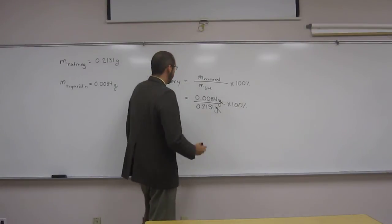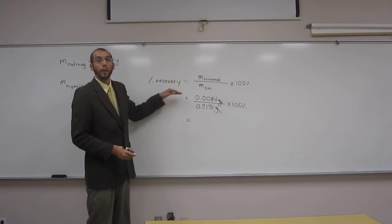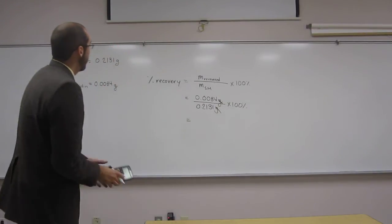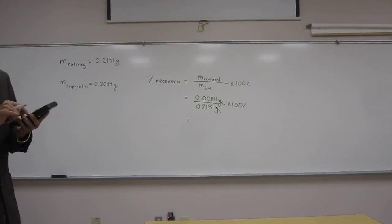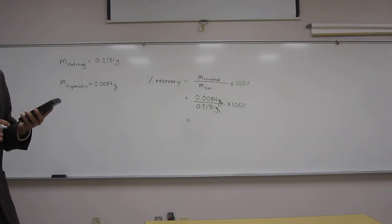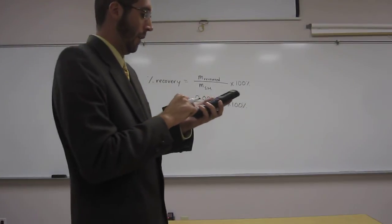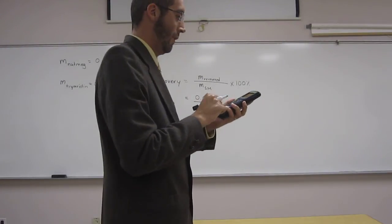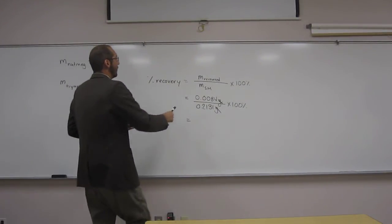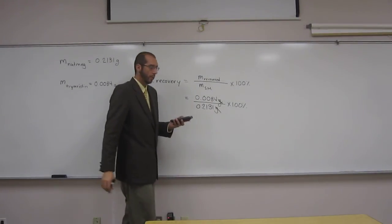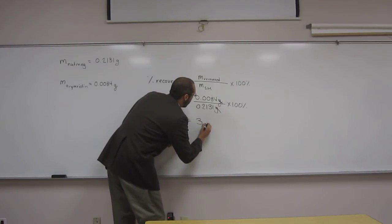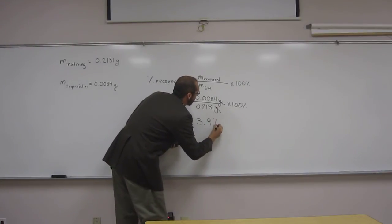Is everybody okay with that? So you're going to get a percent recovery in percentage units. Hopefully that makes sense to you, okay? So let's go ahead and do this. Everybody's got their calculators, I know, since this is organic. So 0.0084 divided by 0.2131 multiplied by 100%. And we're going to do this to two significant figures, of course. So we've got a 3.9% recovery.